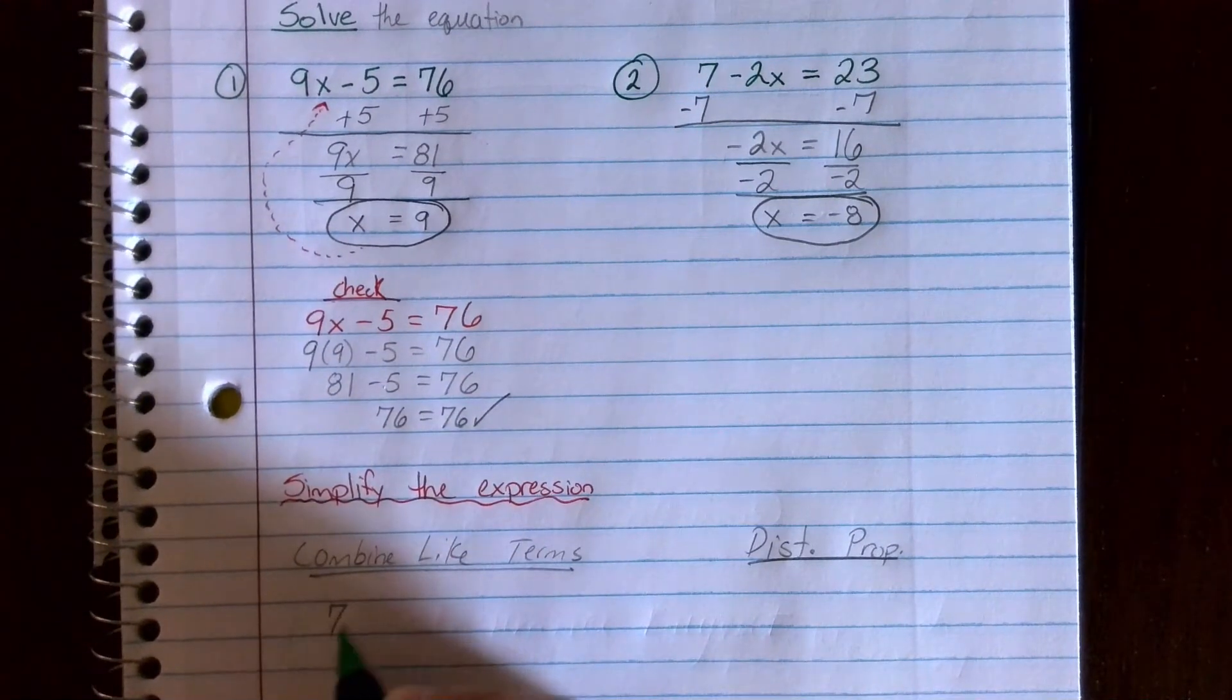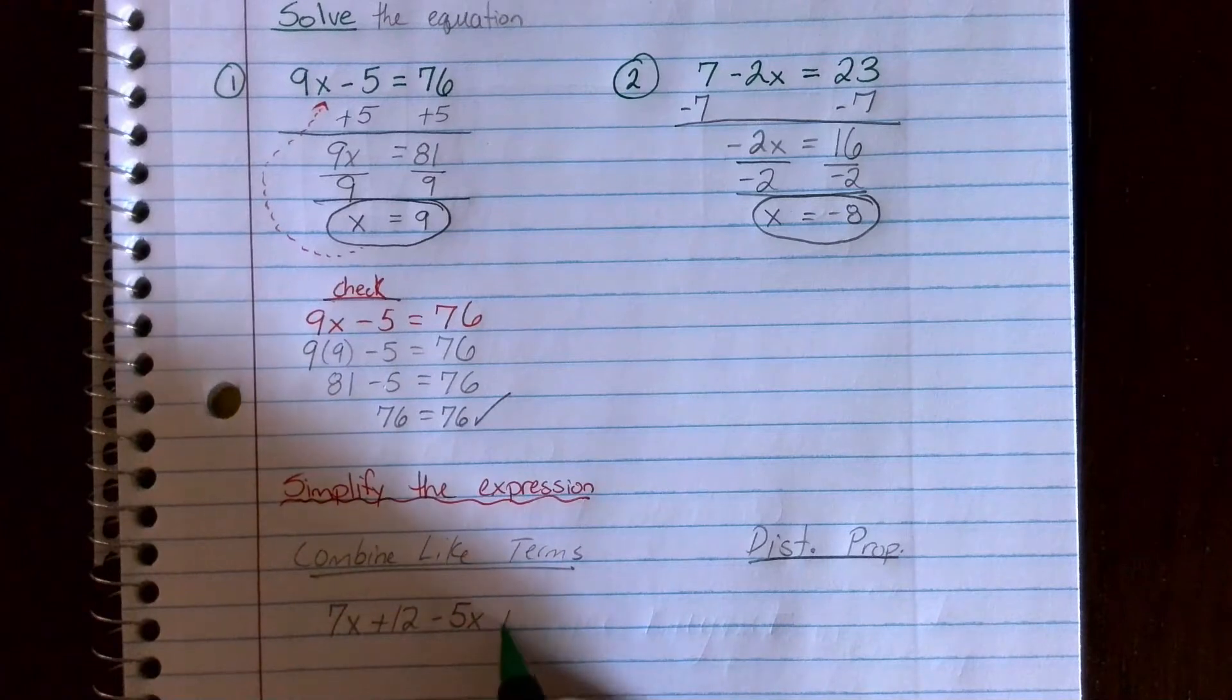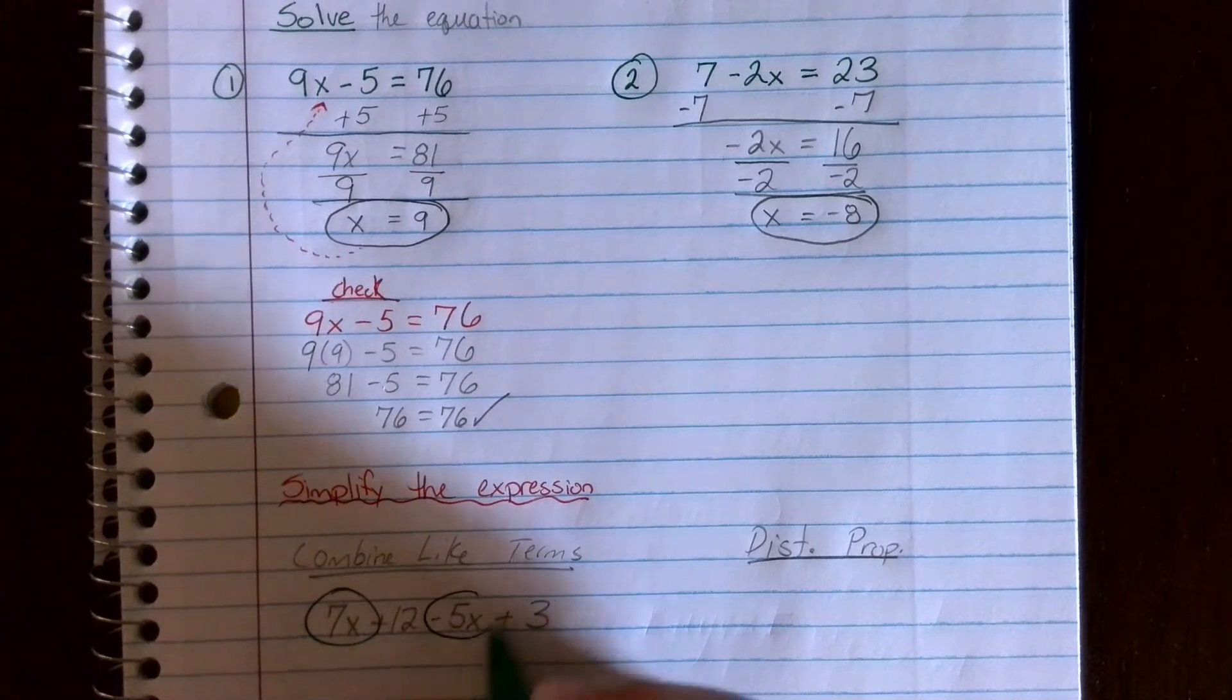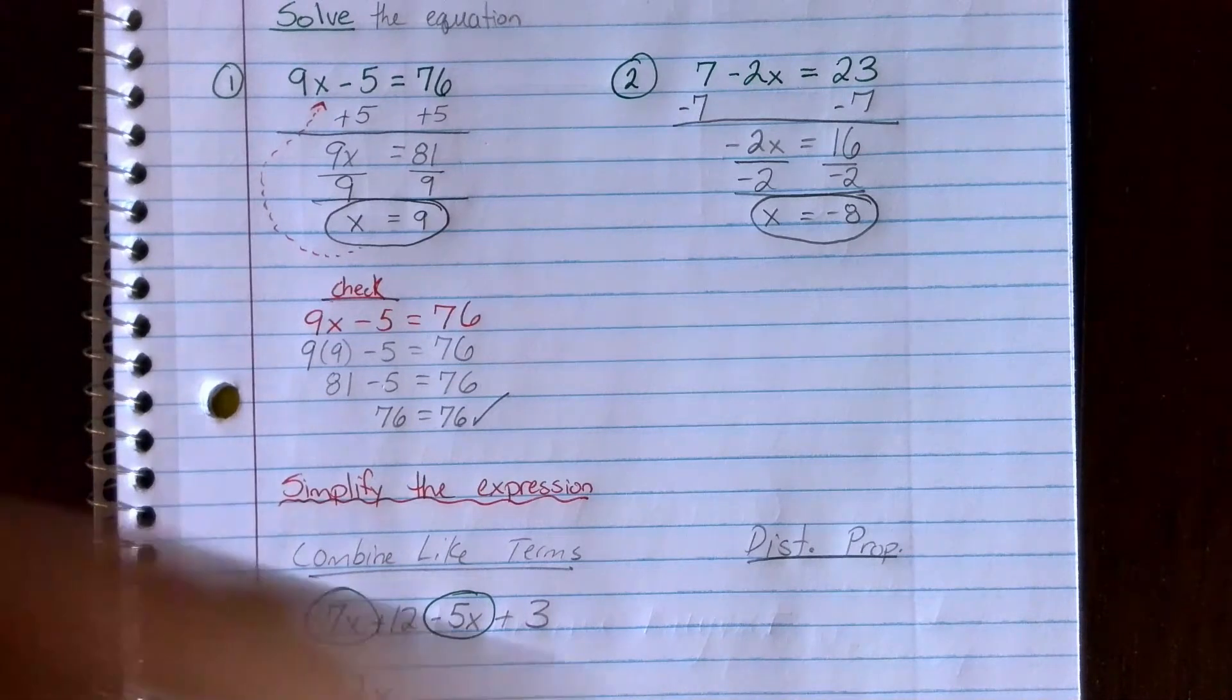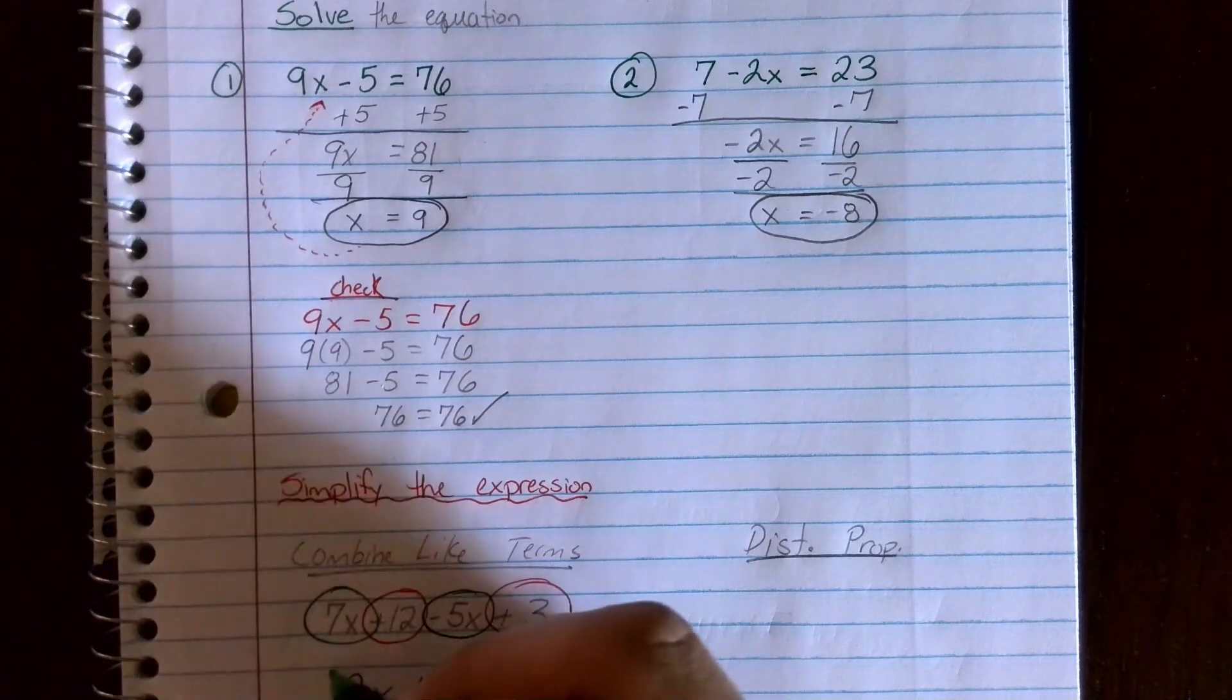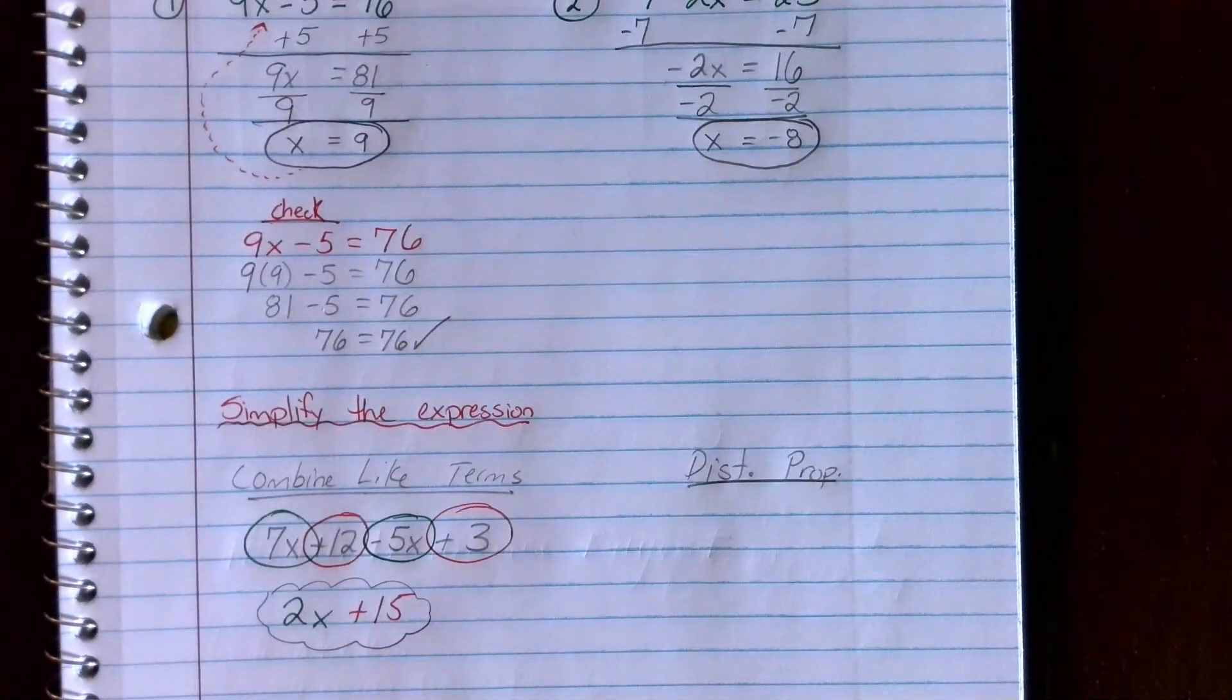If I had something like 7x plus 12 minus 5x plus 3, well I have the 7x and the negative 5x which are like terms. I can combine to get 2x. And I have a positive 12 and a positive 3 which I could combine to get positive 15. So my simplified expression would be 2x plus 15. So you guys all remember doing those combining like terms before, that's going to be something we talk about today.